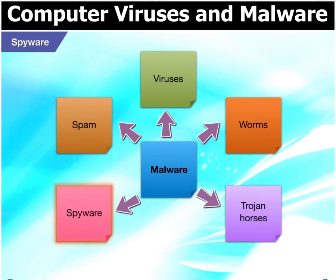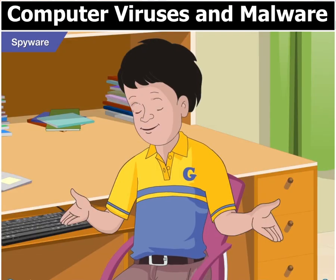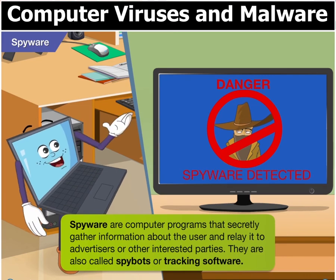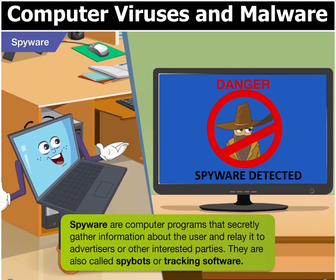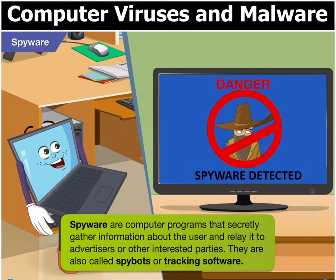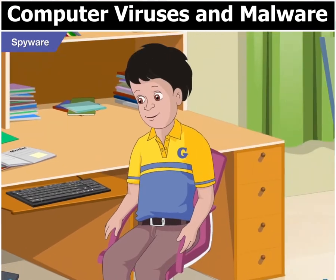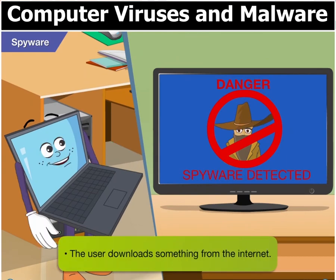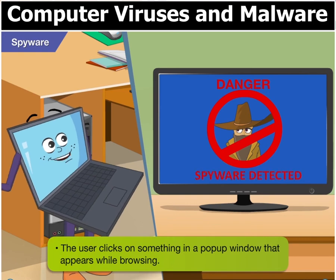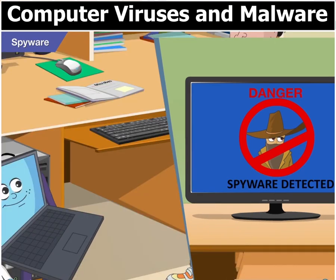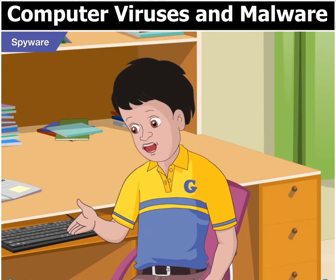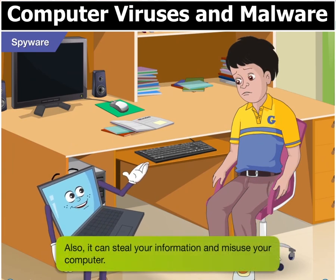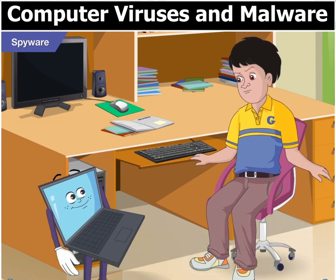Now Goggle, let me tell you about spyware. Spyware? Are these some kinds of secret agents? In a way, yes. Spyware are computer programs that secretly gather information about the user and then send it to advertisers or other interested parties. They are also called spybots or tracking software. So, how does a spyware get installed into a system? Spyware is often installed without your permission when you download something from the internet or when you click on something in a pop-up window that appears while browsing web pages. What harm can spyware do to a computer? Spyware can consume a lot of memory, making your computer too slow to work with. Also, it can steal your information and misuse your computer.